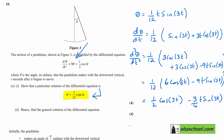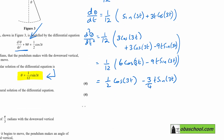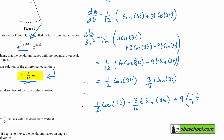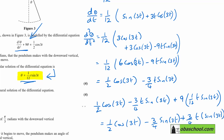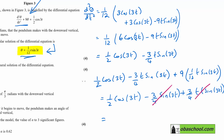Now substituting into the left-hand side of the equation: d²θ/dt² + 9θ = [½cos(3t) − (3/4)t·sin(3t)] + 9·(1/12)t·sin(3t), which equals ½cos(3t) − (3/4)t·sin(3t) + (3/4)t·sin(3t).